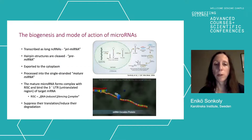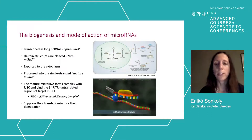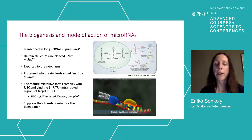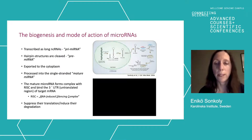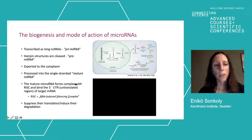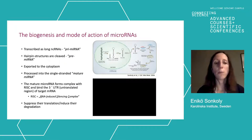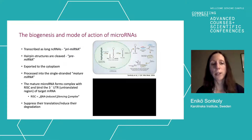The mature microRNA can then exert its effects together with proteins called the RISC complex. It can bind to the target messenger RNA and inhibit protein synthesis. The mature microRNA is only about 19 to 22 nucleotides long. It forms a complex with the RISC, binds to the three-prime untranslated region of the target messenger RNA, and typically suppresses translation or induces messenger RNA degradation. RISC stands for the RNA-induced silencing complex.